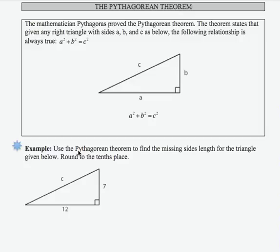In this example, we're asked to use the Pythagorean Theorem to find the missing side length for the triangle given below.